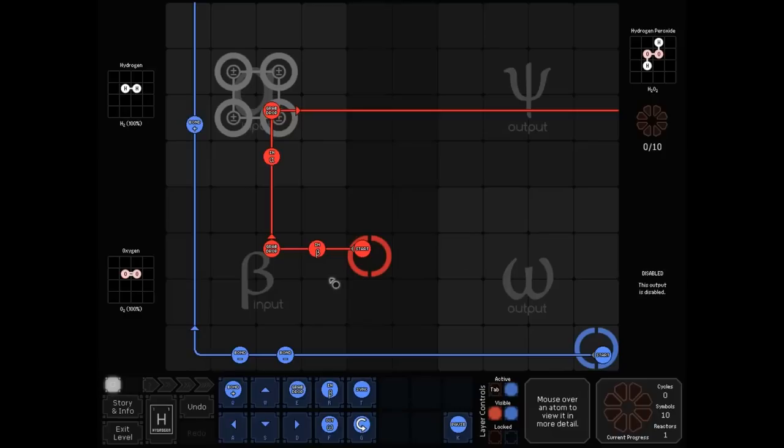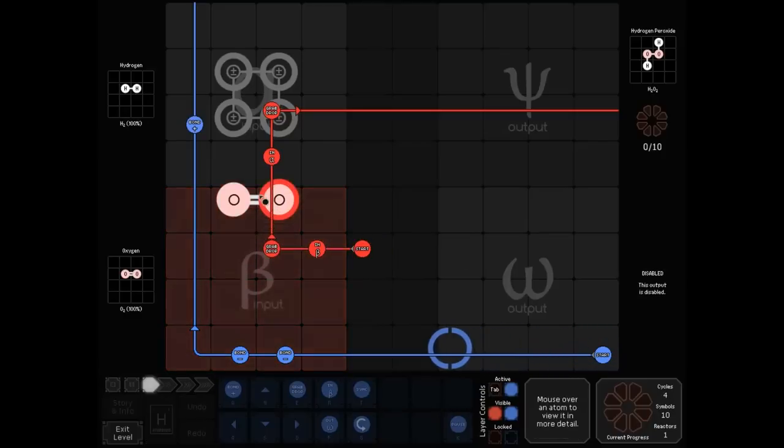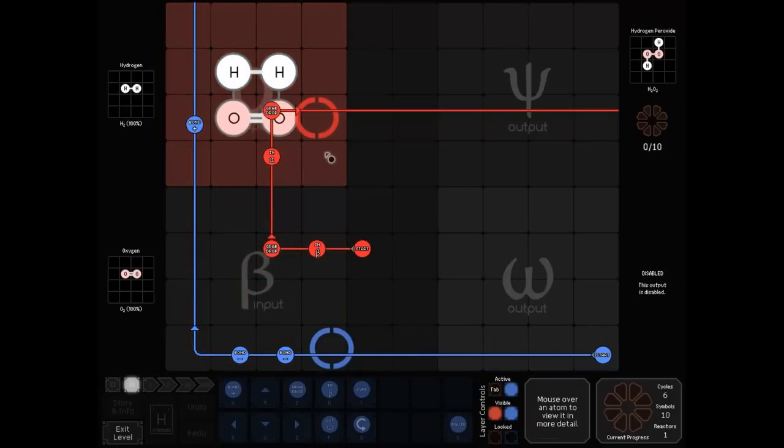Let me show you an easier way. Okay, let's input our oxygen, grab it, input hydrogen, drop it right there. Let's get rid of red, we don't even need to see what red's doing.